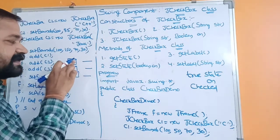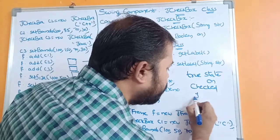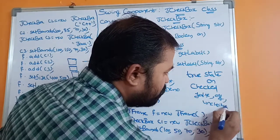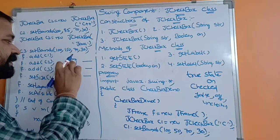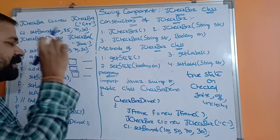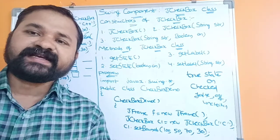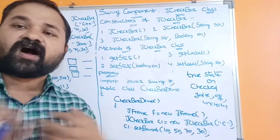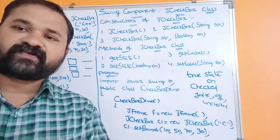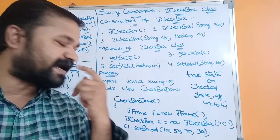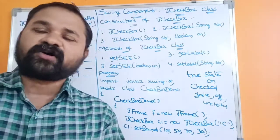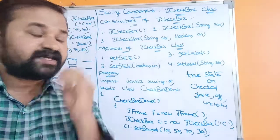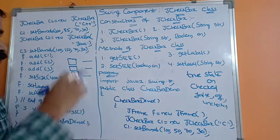If you click on the checkbox again, the tick mark will disappear and the state of the checkbox becomes false, or off, or unchecked. False, off, or unchecked means there is no tick mark symbol in the checkbox. Clicking on the checkbox changes the state from true to false, or from on to off, or from checked to unchecked.